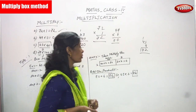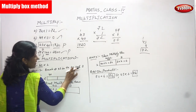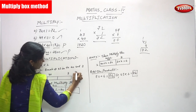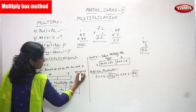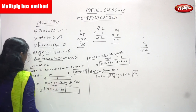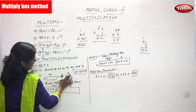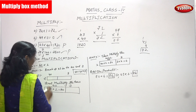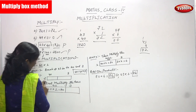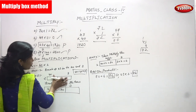Step 1: break up 43 into 40 and 3, so 43 becomes 40 plus 3. Step 2: draw boxes and write 40 and 3 in separate boxes. In the corner, write 2 — the number you are going to multiply. So 40 plus 3 is going to be multiplied by 2.